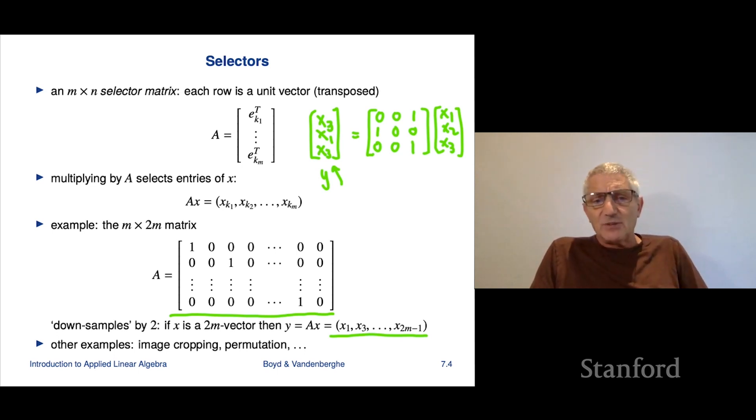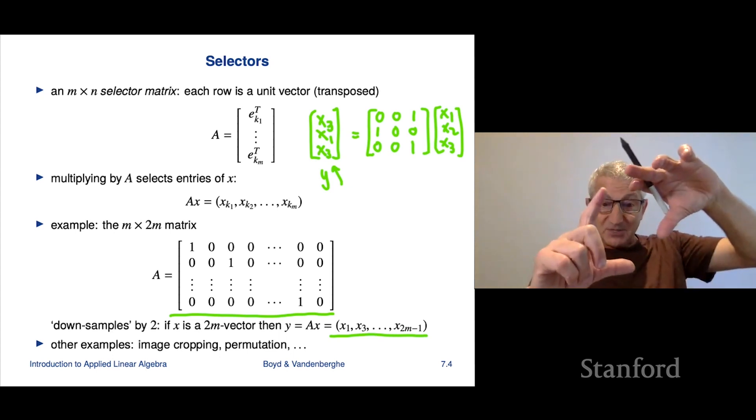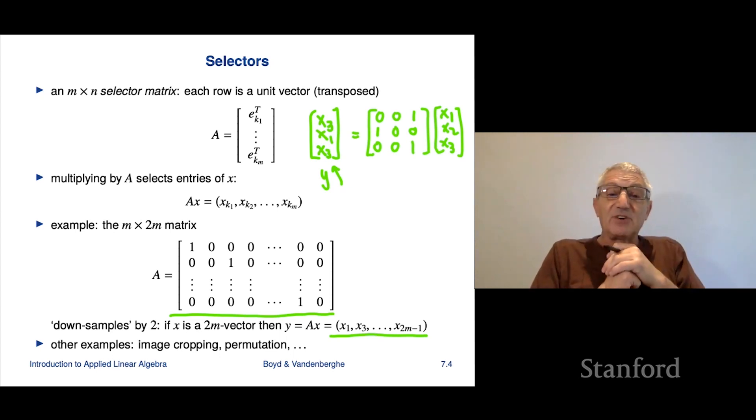But this comes up all over the place in a lot of image processing. You'd get the same thing like image cropping would be a selector. So if I have an image represented by a big long vector and I want to do things like crop to some smaller portion of it, I'm just selecting various pixels and again, A would be a selector matrix. So this will come up. We'll see this in a lot of applications.